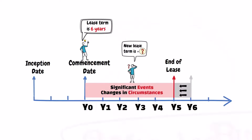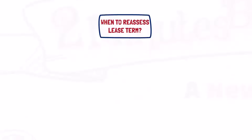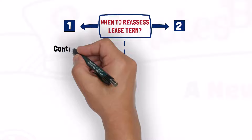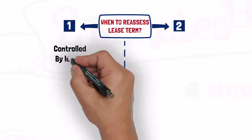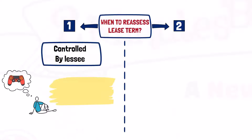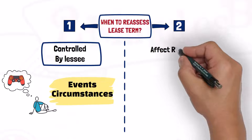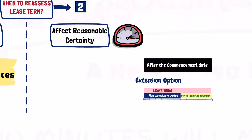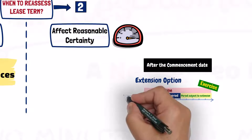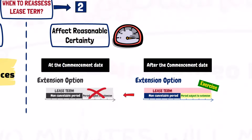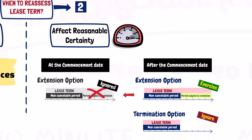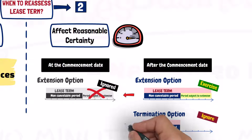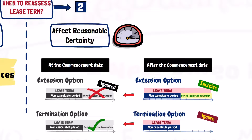That reassessment is done only if those events or changes in circumstances are within the control of the lessee, and can affect whether the lessee is reasonably certain to exercise an option not previously included in its determination of the lease term, or not to exercise an option previously included in its determination of the lease term.